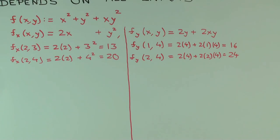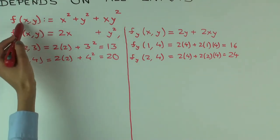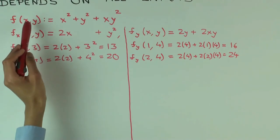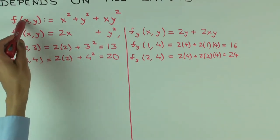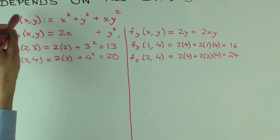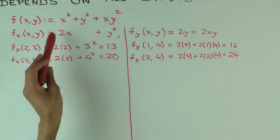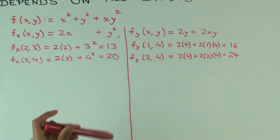So, in general, the value of the partial derivative depends on all the inputs. We could extend this to functions of more than two variables. Instead of just x and y, you could have x, y, and z, or x1, x2, to xn. The general observation is that the partial derivative with respect to any one variable could, in principle, depend on the other variables as well.